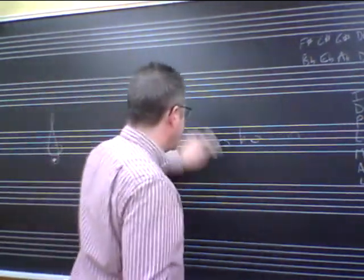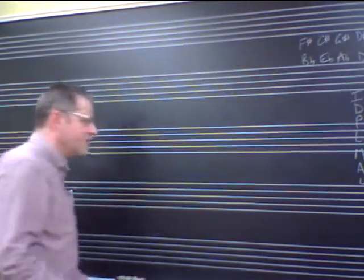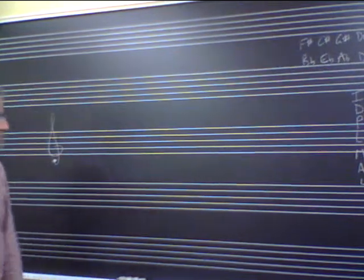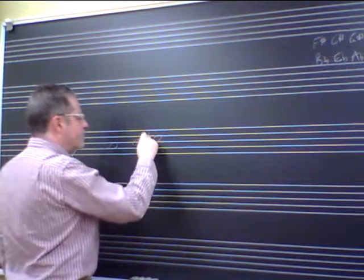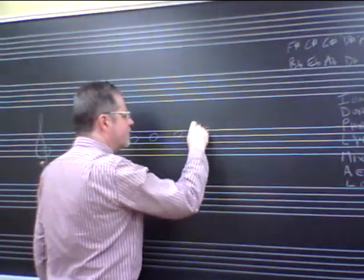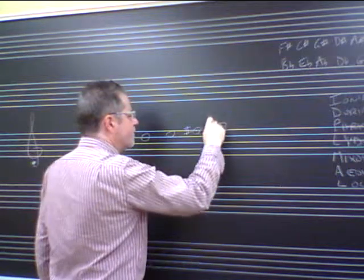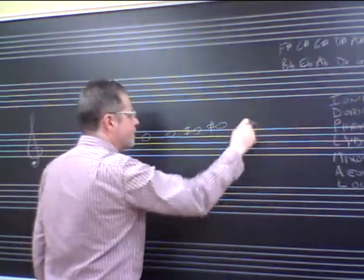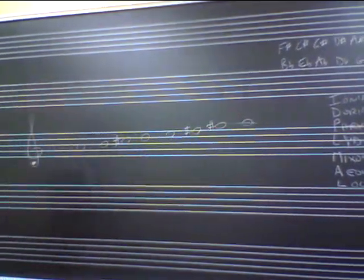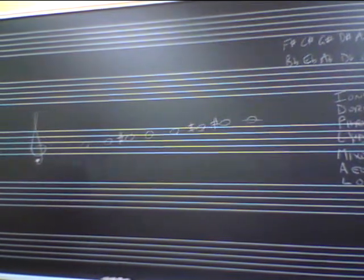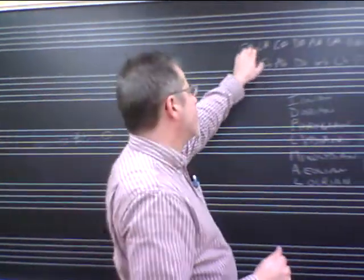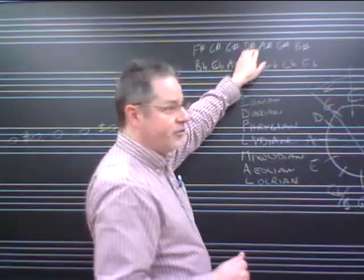So let's try one more scale. Let's take A major for whatever reason. So A, B, C-sharp, D, E, F-sharp, G-sharp, and then A. All right, so there's A major, A Ionian.